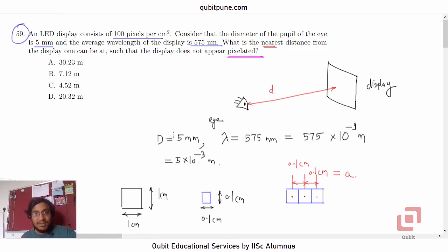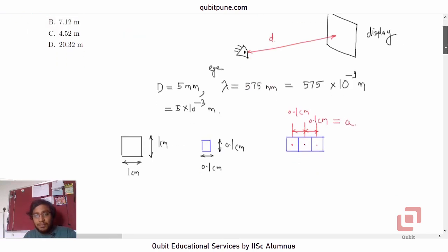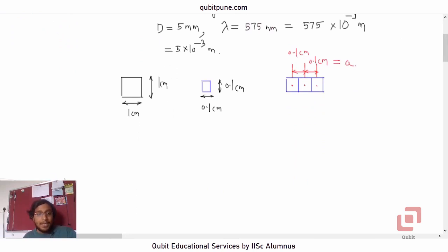Now this is a human eye pupil, so it is like a circular aperture. Let's now put everything in the formula. Two adjacent pixels are now like two physically separated objects for us, and what is the separation distance? 0.1 centimeters. What is the formula? Formula is a equal to 1.22 lambda into D by d, where symbols have their usual meanings.